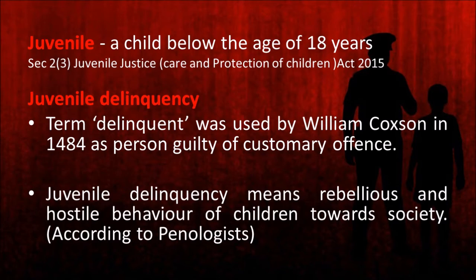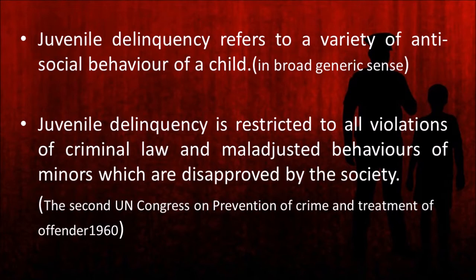But according to penologists, juvenile delinquency means rebellious and hostile behaviour of children towards society. In a broad generic sense, we can say that juvenile delinquency refers to a variety of antisocial behaviours of children. It may range from pickpocketing to murder and may include all other antisocial behaviours of children. Juvenile delinquency does not have a fixed definition, but there was an attempt to define this term at the 2nd UN Congress on Prevention of Crime and Treatment of Offenders in 1960.